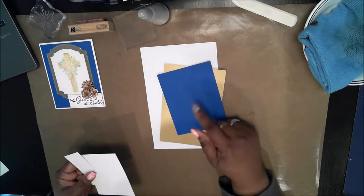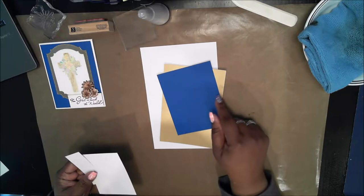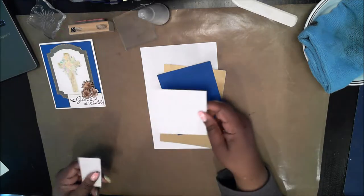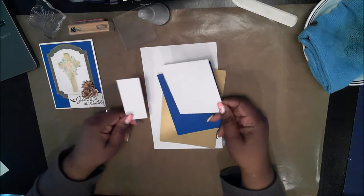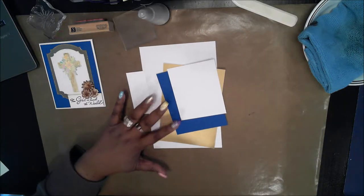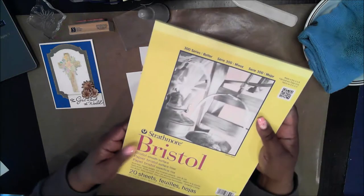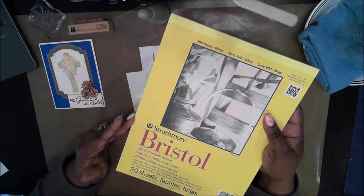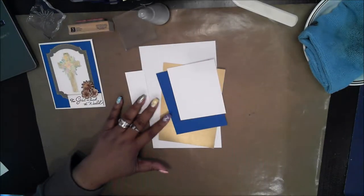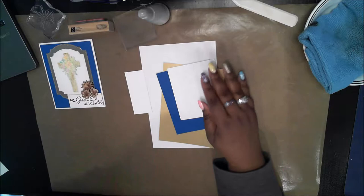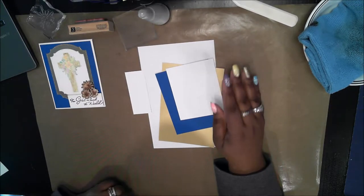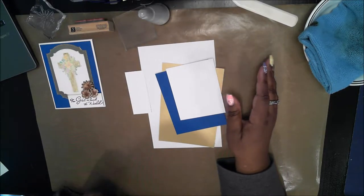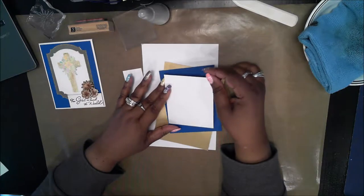I have a blue mat which is four inches by five and a quarter and I have two pieces of watercolor paper. The watercolor paper that I use for this technique is Strathmore Bristol smooth paper. This is the best paper for the technique that I'm using but you can try to use whatever watercolor paper you have and see how it turns out.